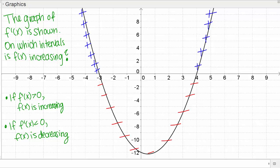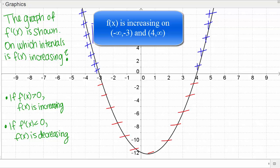We're specifically asked for the intervals that f of x is increasing. That's going to be the intervals where the derivative is positive, where I've shown these blue plus signs. This interval here is going to be from negative infinity to negative 3 if I use interval notation. Then this interval over here is from 4 to infinity. These are the intervals where the derivative is positive and thus the original function is increasing on those intervals.